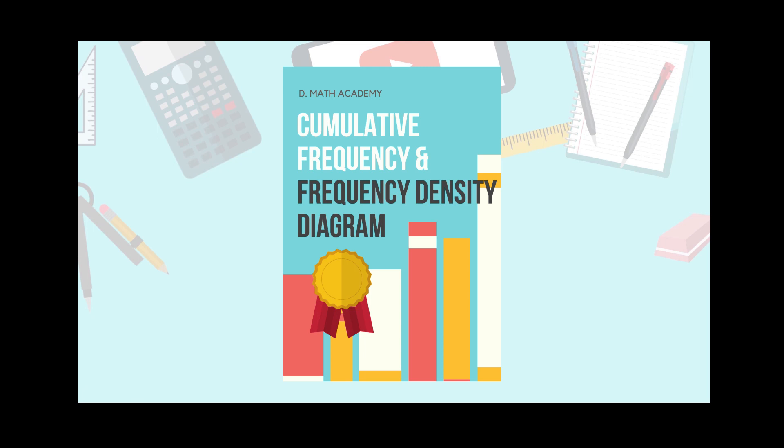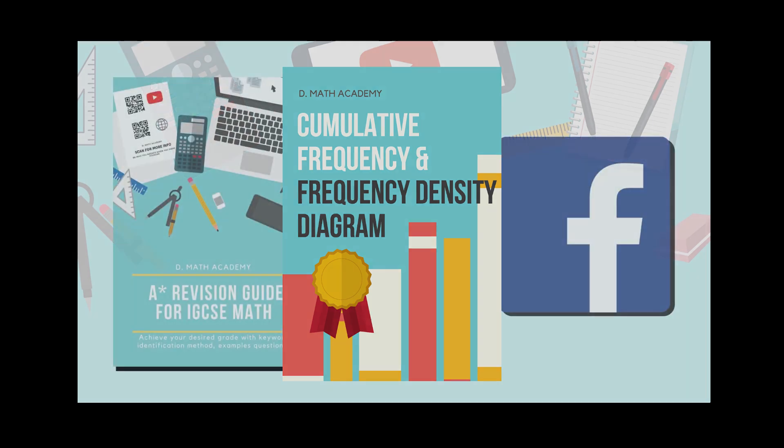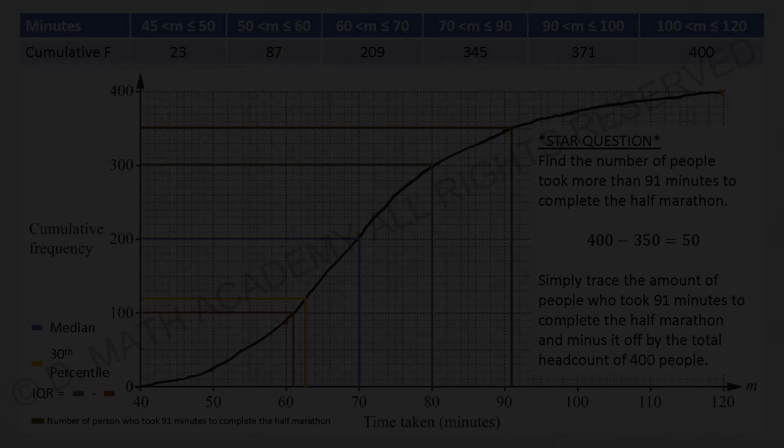So for the continuation of Mean, Mode, Median, it will be the cumulative frequency and frequency density diagram. This question is actually linked and each of the colors represent different things.